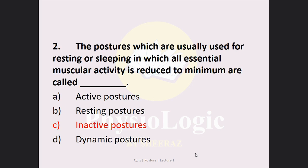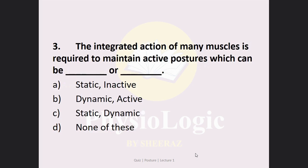Just remember that there is no posture in which muscular activity is reduced to zero. There is always some muscular activity — you cannot nullify muscular activity to zero. So we can say there is minimum muscular activity, but we cannot say there is zero muscular activity.